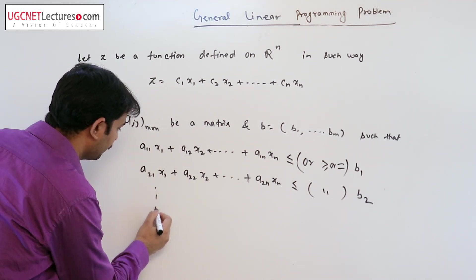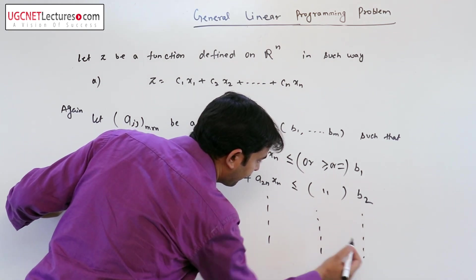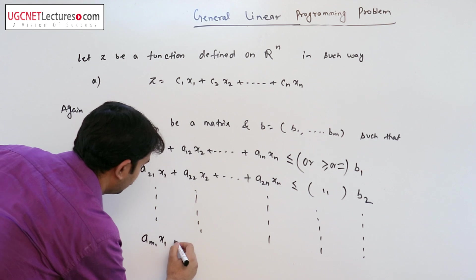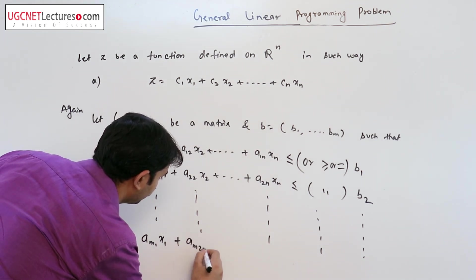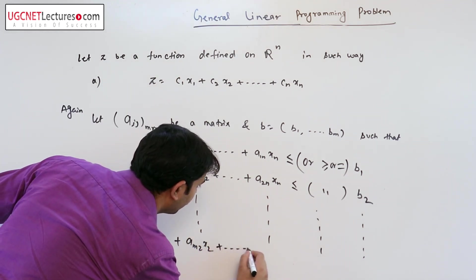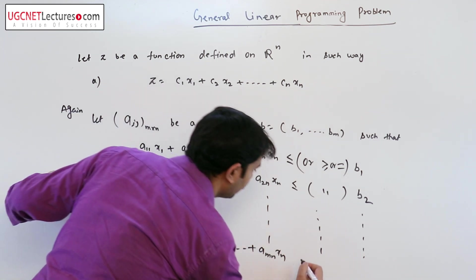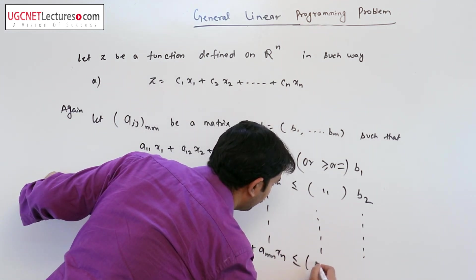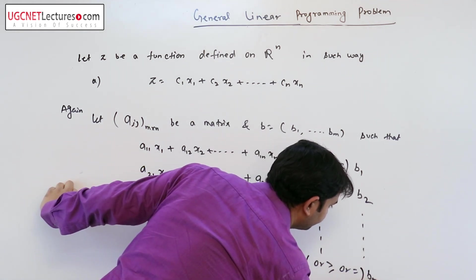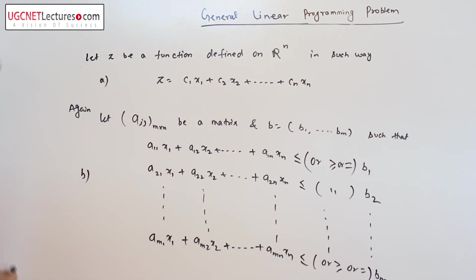Similarly, aₘ₁x₁ plus aₘ₂x₂ ... as it is m cross n matrix, aₘₙxₙ is less than equal to or greater than equal to or equal to bₘ. And finally,